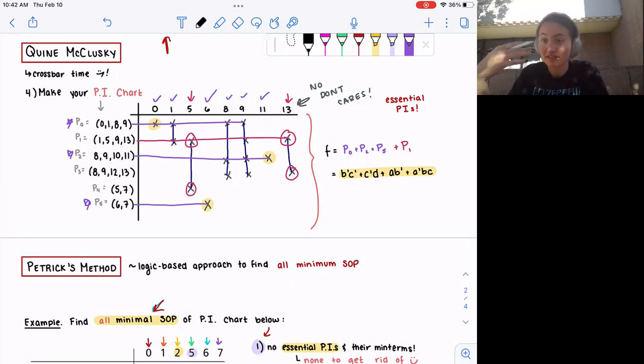Before I get into Petrick's method, which is the second part of this video, because we're talking about prime implicant charts, I would like to talk about the last problem, which is covering Quine-McCluskey. I'm never sure if it's Quine or Quinn, to be honest. I like a little mystery. So moving on,